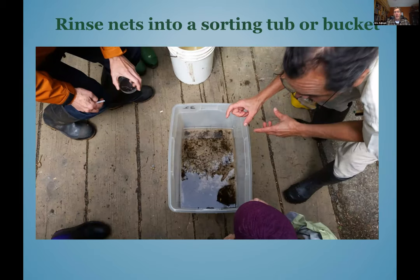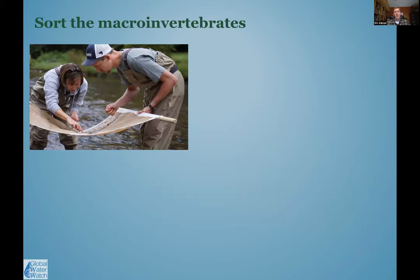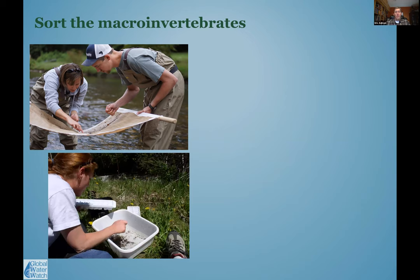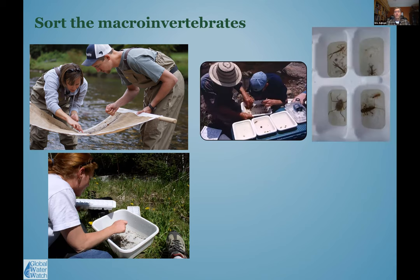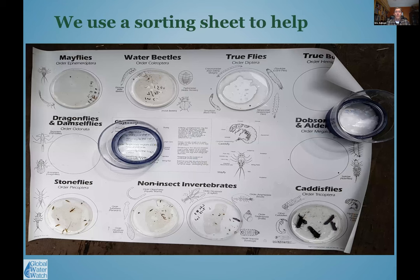Once we've collected our sample in a net, we use stream water to rinse everything into a sorting tub. In some cases things remain on the net, so we do what's called picking the net. We then look into the tubs, identify what's moving, collect it, and categorize it. The sorting sheet helps put organisms into different categories, and if something can't be identified, we set it aside until a guide or someone more experienced can help.